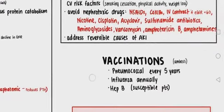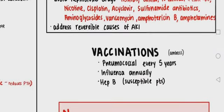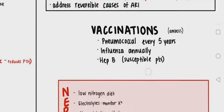Vaccinations for CKD include pneumococcal vaccination every five years, influenza vaccine given annually, and hepatitis B vaccine for susceptible patients.